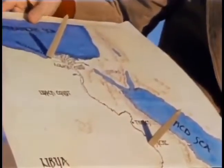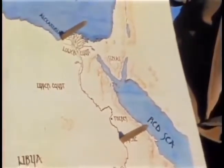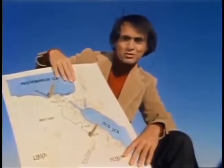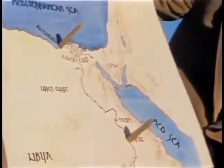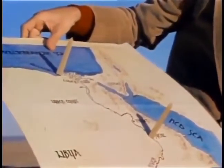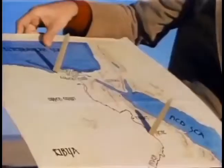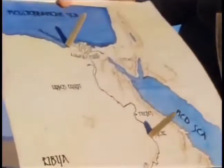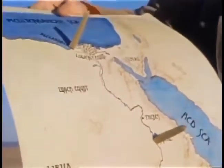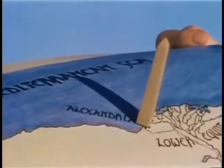Now, if at a certain moment each stick casts no shadow — no shadow at all — that's perfectly easy to understand, provided the earth is flat. But how could it be, Eratosthenes asked, that at the same instant there was no shadow at Syene, and a very substantial shadow at Alexandria?